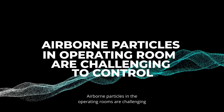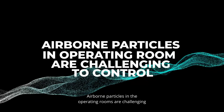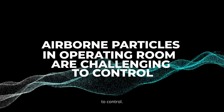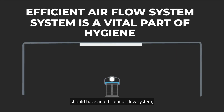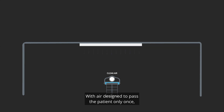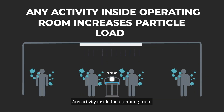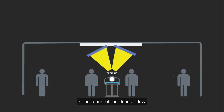Airborne particles in the operating room are challenging to control. Every operating room should have an efficient airflow system — it's a vital part of hygiene, with air designed to pass the patient only once. Any activity inside the operating room increases particle load, and surgical lights are placed in the center of the clean airflow.